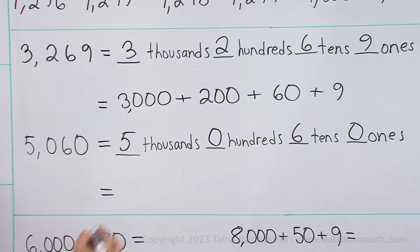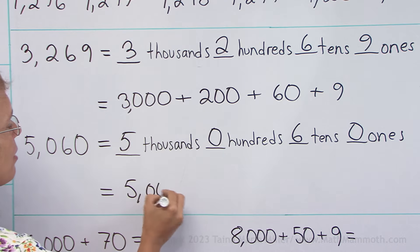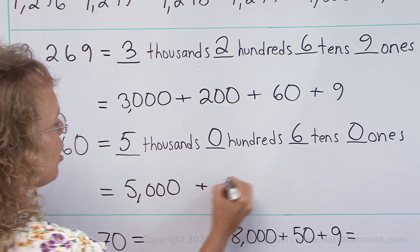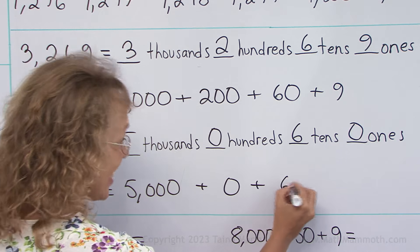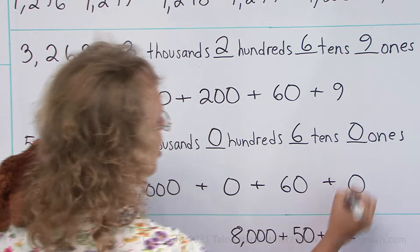And so when I write it as a sum, I have five thousand and then no hundreds and then six tens, which is sixty, and then no ones.